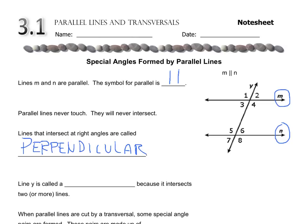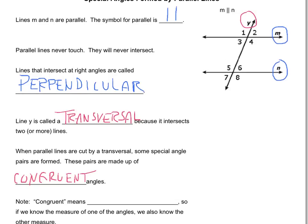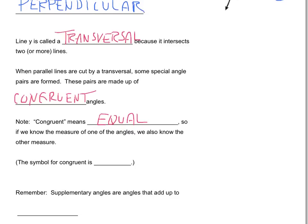Line Y is called a transversal because it intersects two or more lines. When parallel lines are cut by a transversal, some special angle pairs are formed. These pairs are made up of congruent angles — remember, congruent means equal. The symbol for congruent is a little squiggle over the equal sign. Also, from the previous introductory lesson, supplementary angles are angles that add up to 180 degrees.